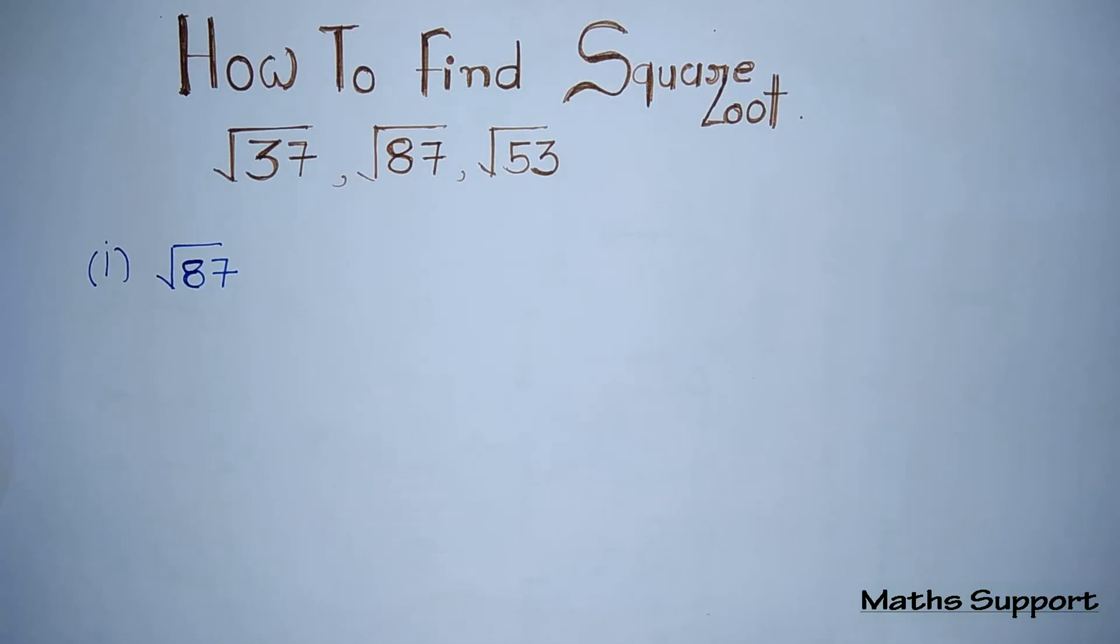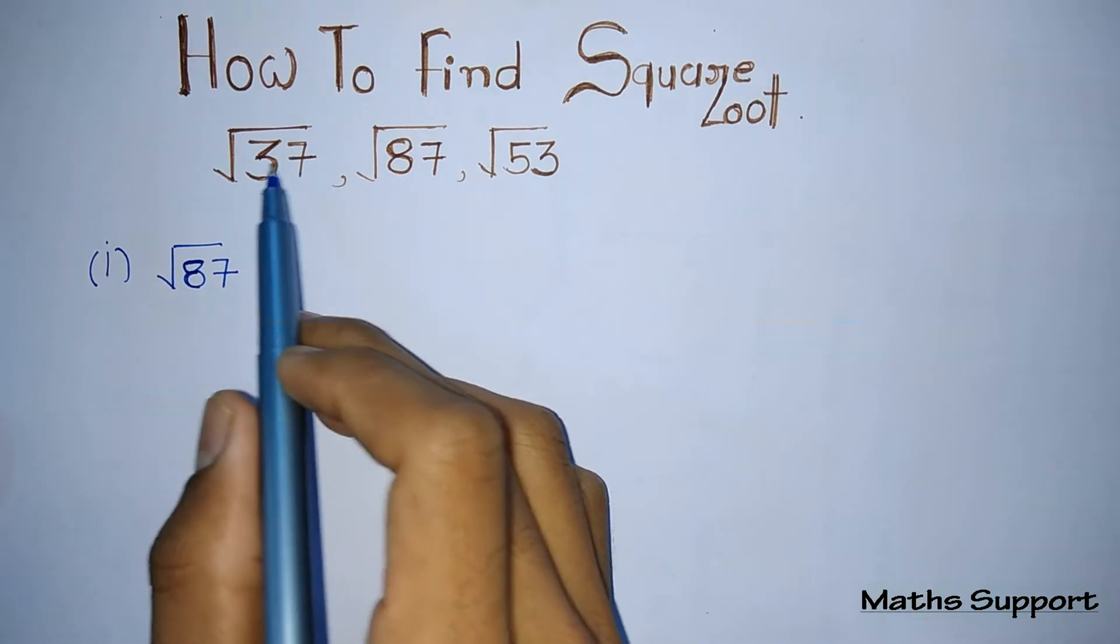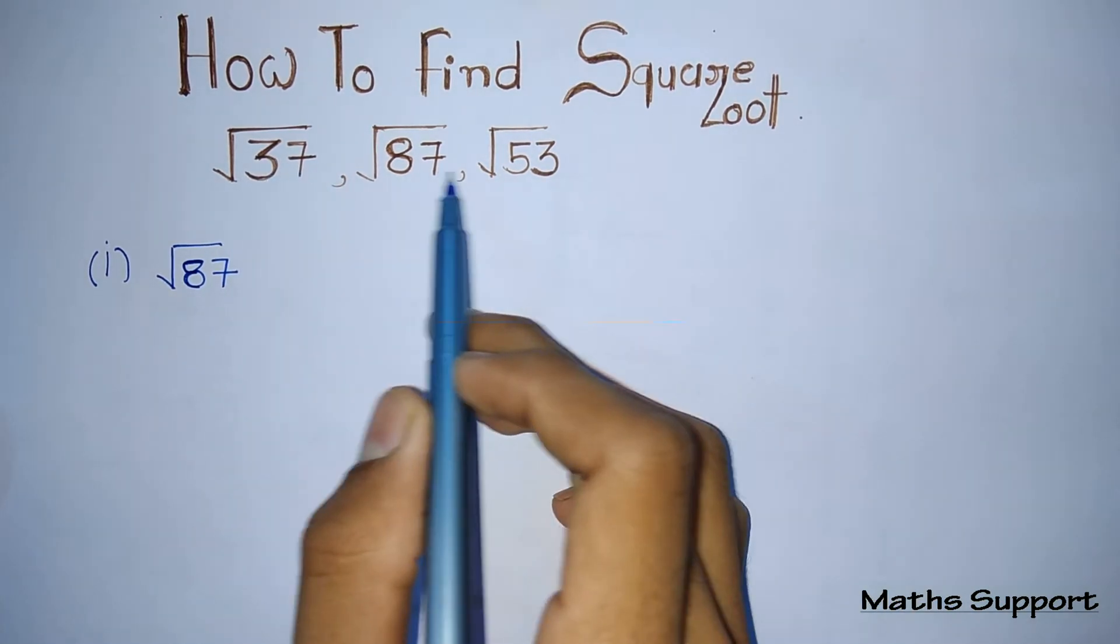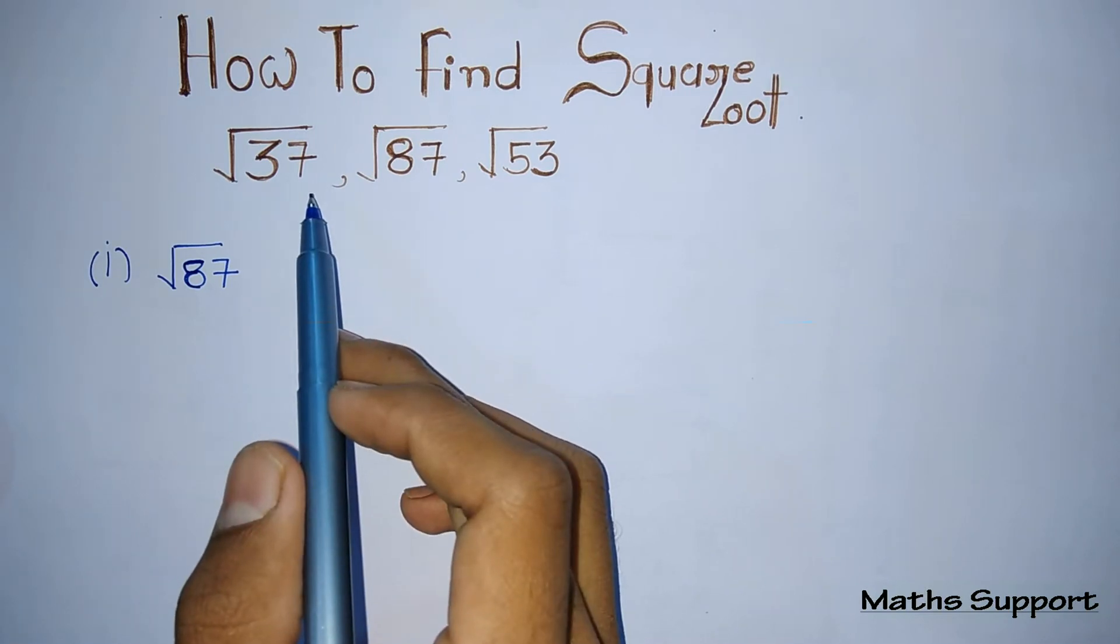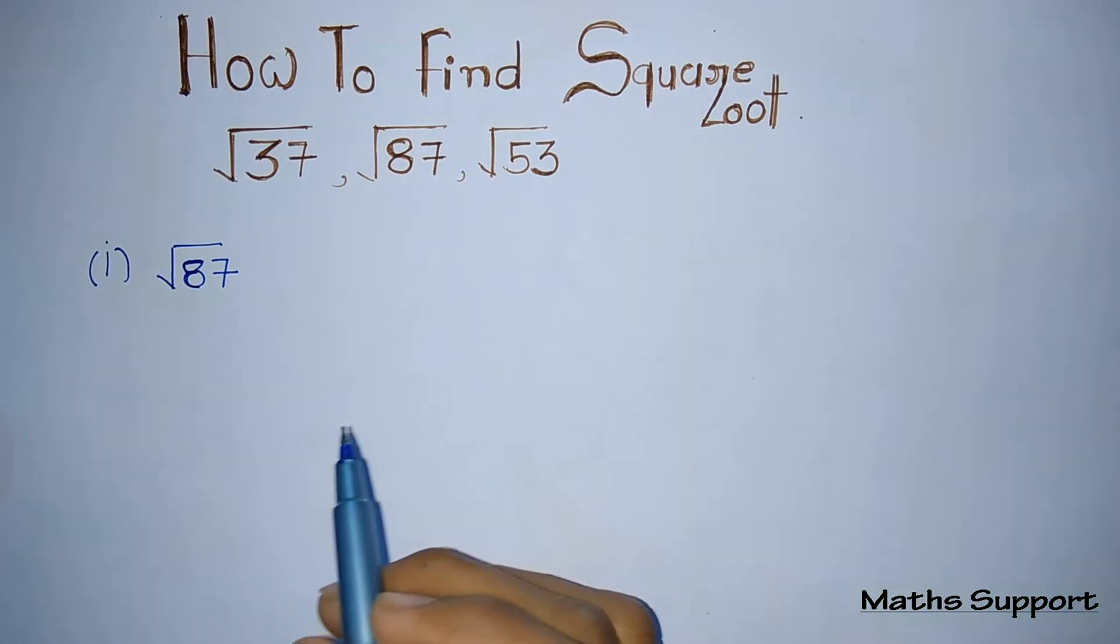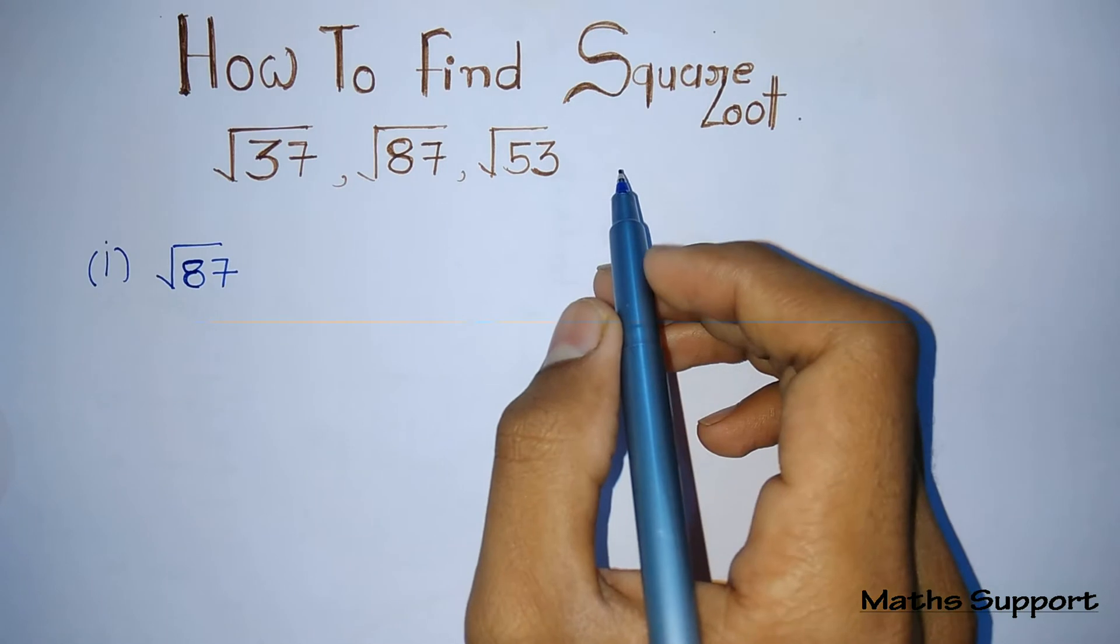Hello guys, welcome to Math Support. Today we'll discuss how to find square roots of numbers like 37, 87, and 53. Basically, they are non-perfect square numbers. What do you mean by non-perfect square number? Numbers which are not perfect squares.